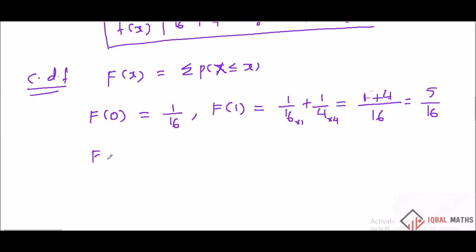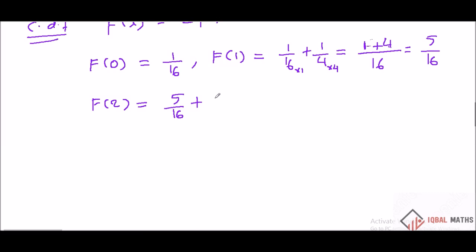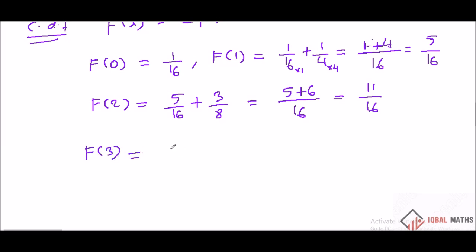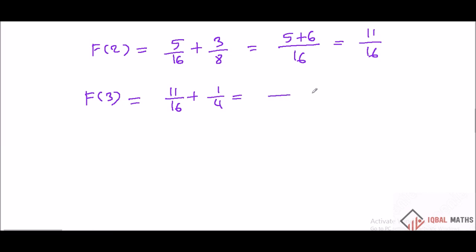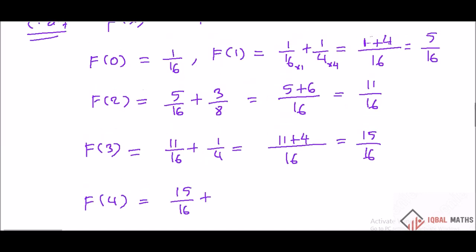F of 2: F of 1 plus P(X=2) equals 5 by 16 plus 6 by 16, which gives 11 by 16. F of 3: 11 by 16 plus 4 by 16 equals 15 by 16. F of 4: 15 by 16 plus 1 by 16 equals 16 by 16, which is 1.